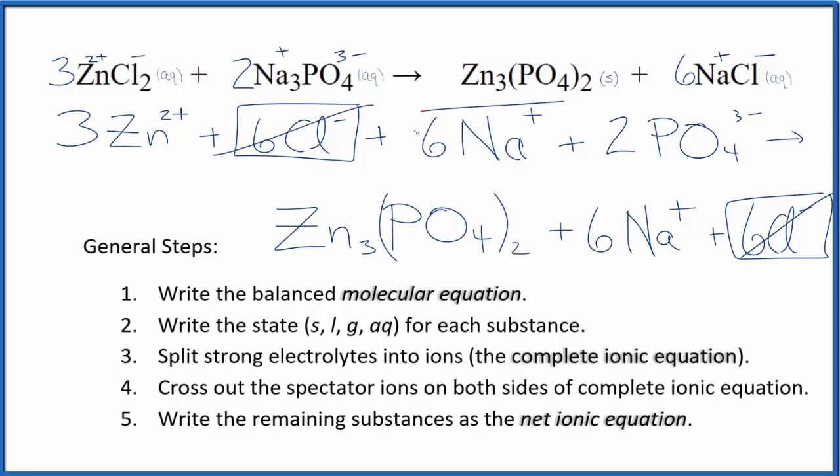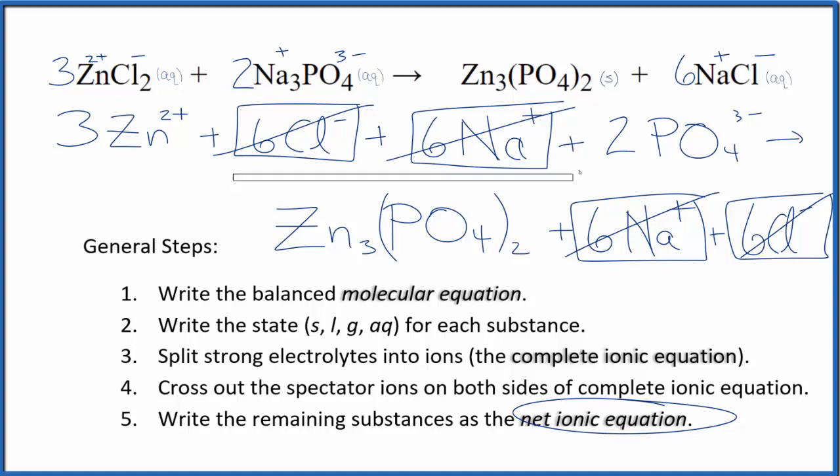Here I have six sodium ions, and again in the products, six sodium ions. That's a spectator ion. Cross it out. What's left, that's the net ionic equation for zinc chloride plus sodium phosphate. I'll clean this up and write the states in. We'll have our net ionic equation.